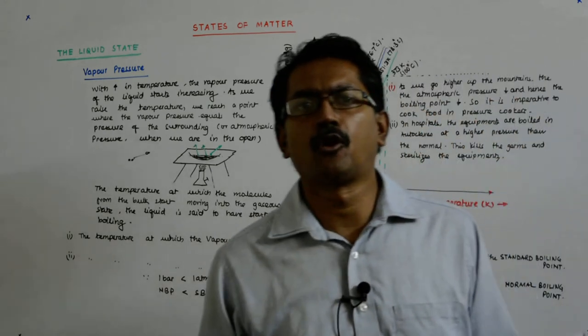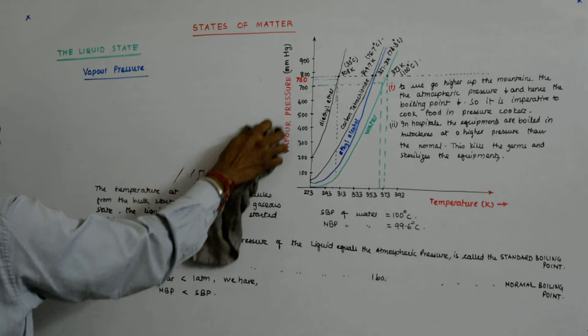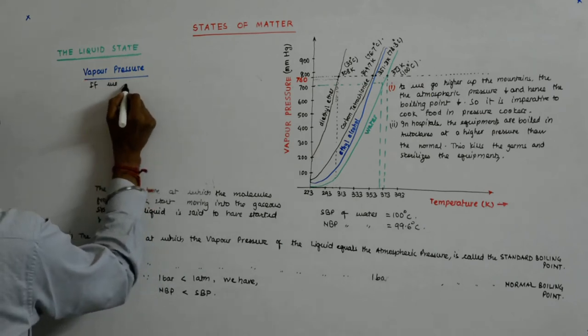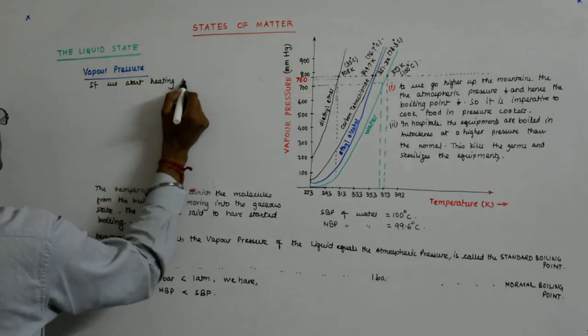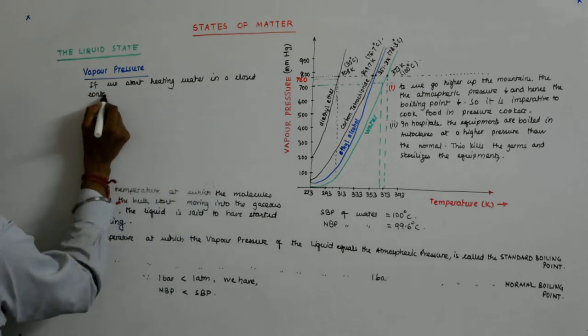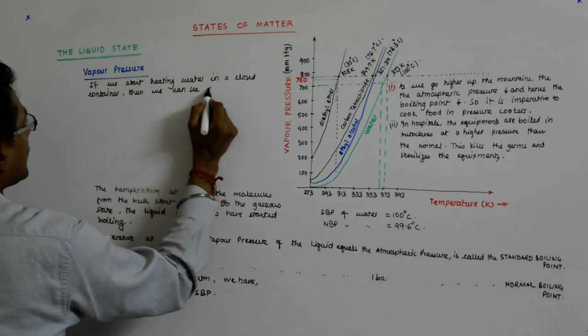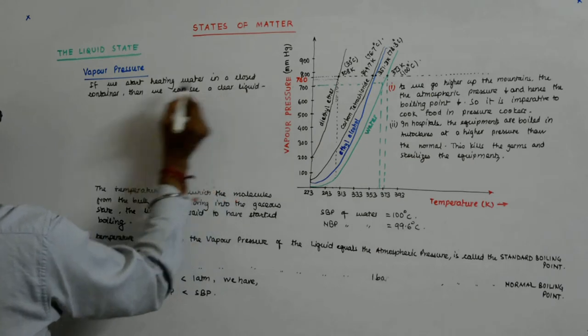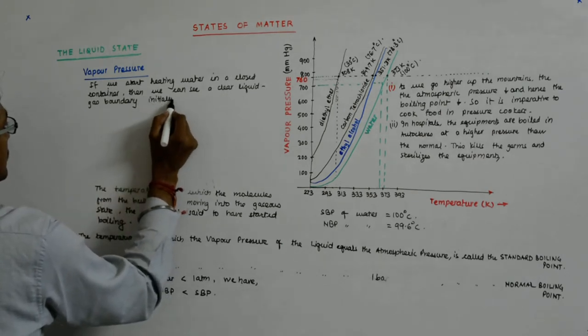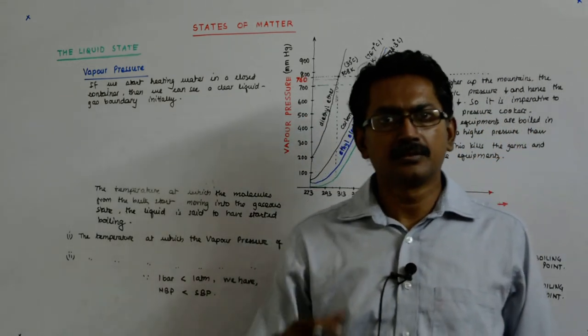If we start heating water in a closed container, then we can see a clear water liquid-gas boundary initially. As you heat it more and more, more and more liquid starts turning into vapor.